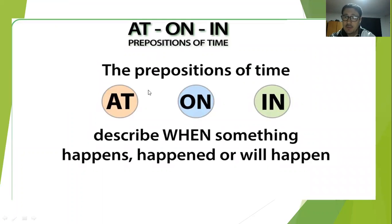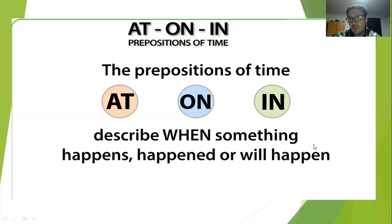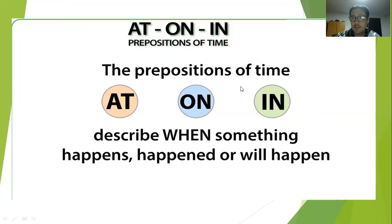¿Cuáles son estas preposiciones de tiempo? Son tres: at, on, in. Y nos sirven para describir cuando algo ocurre, ocurrió, o va a ocurrir. Tenemos entonces estas tres: at, on, in.